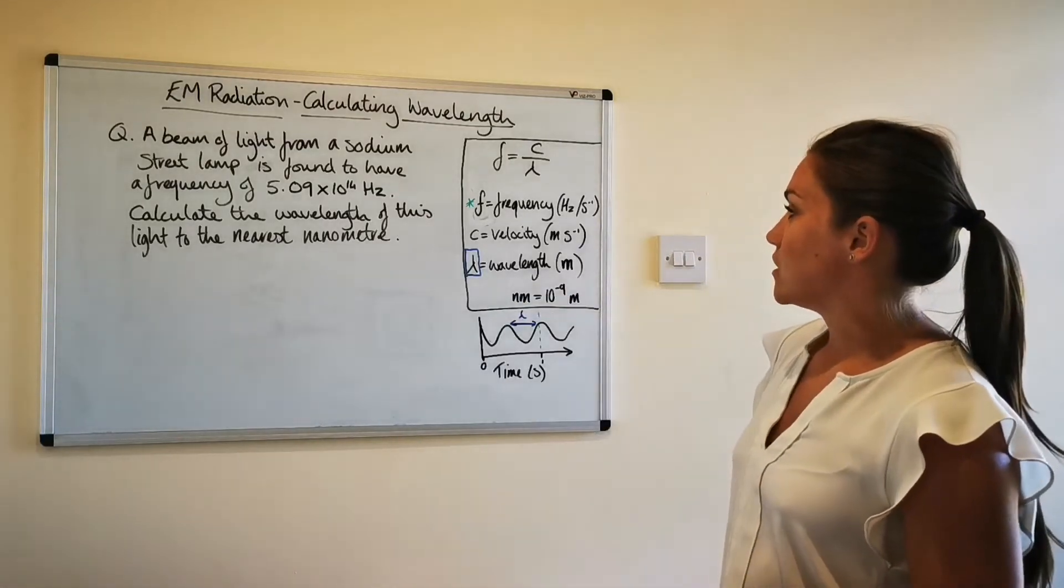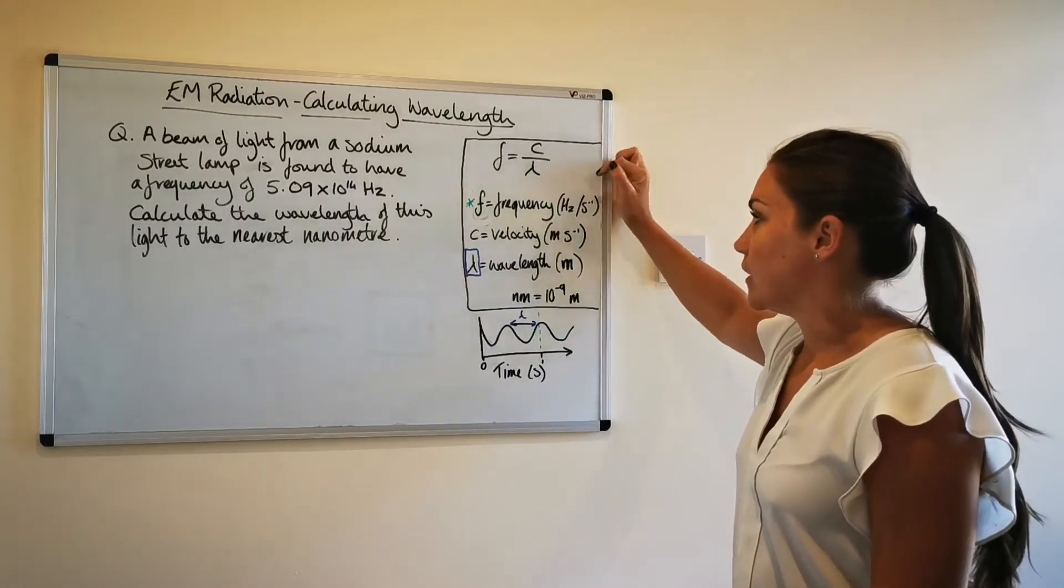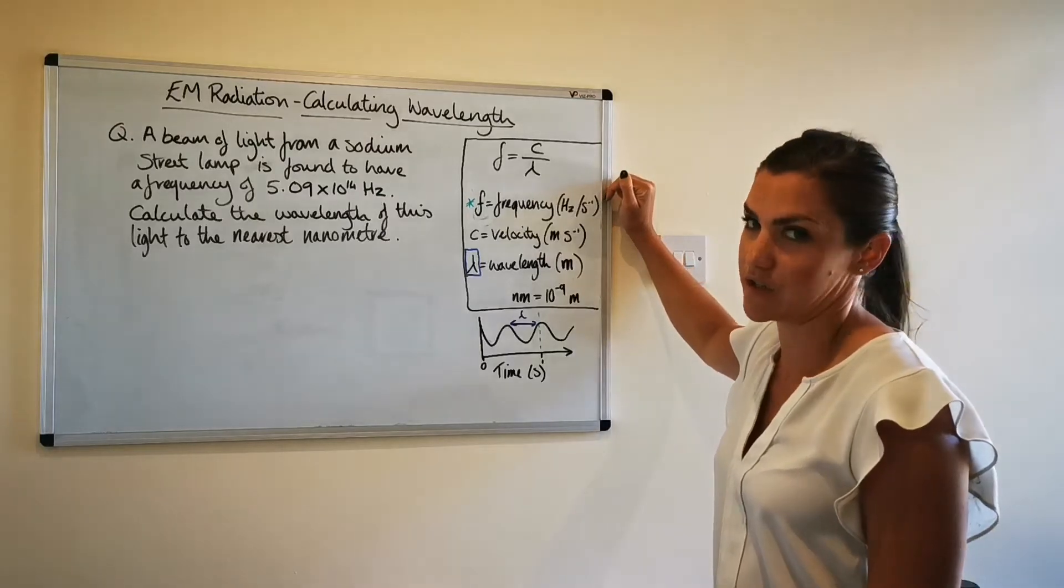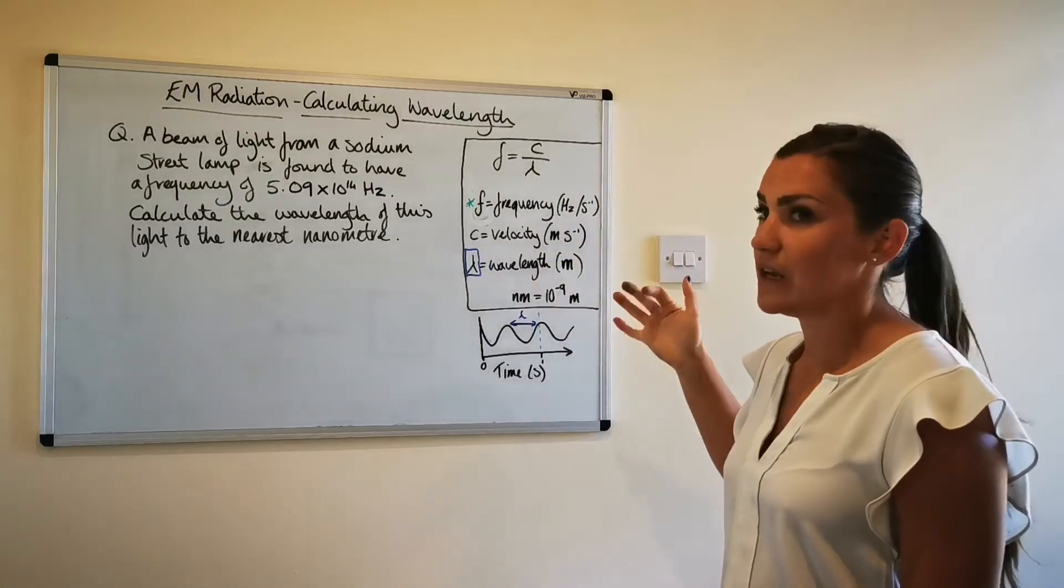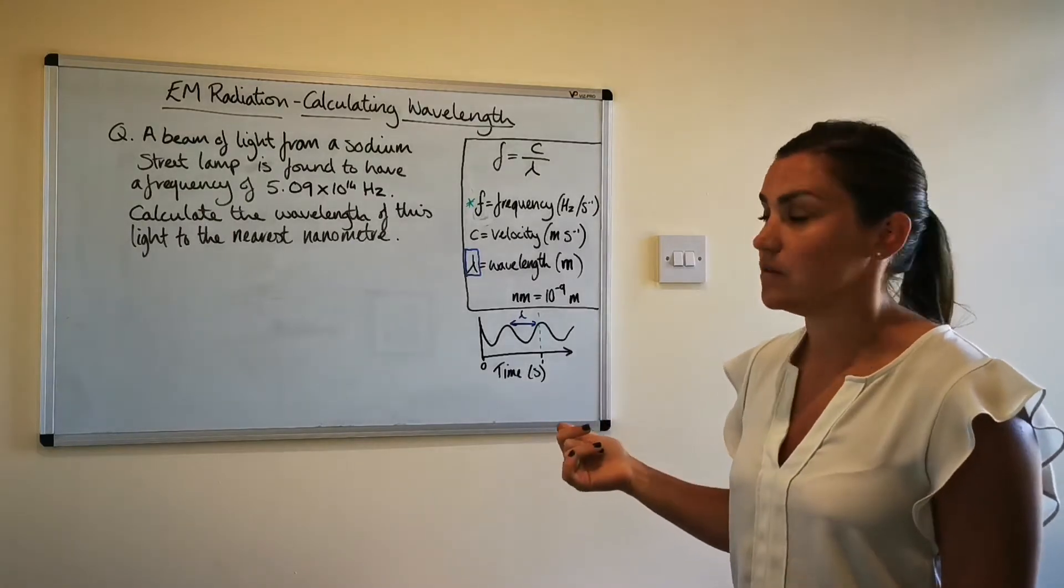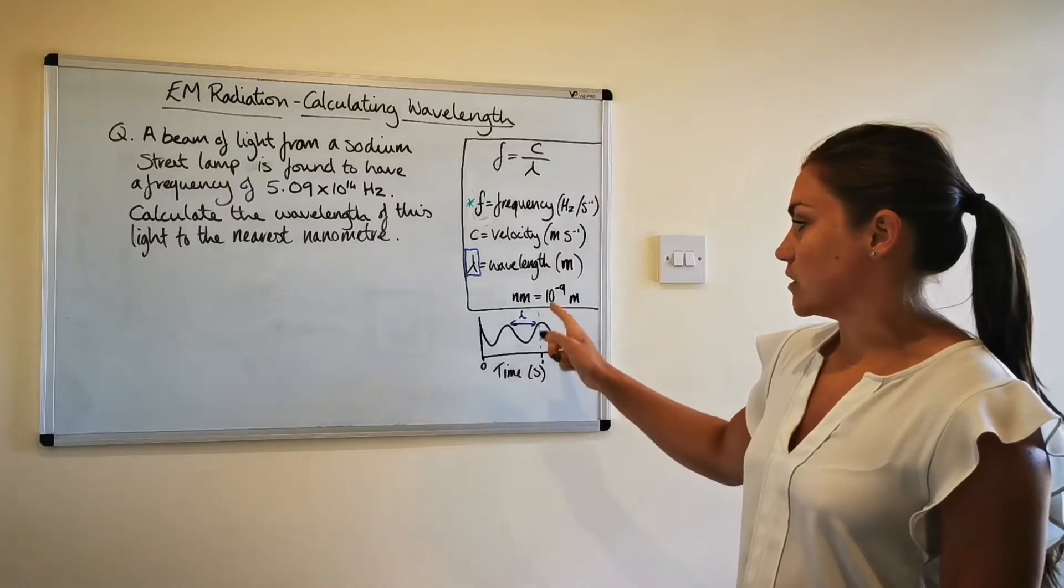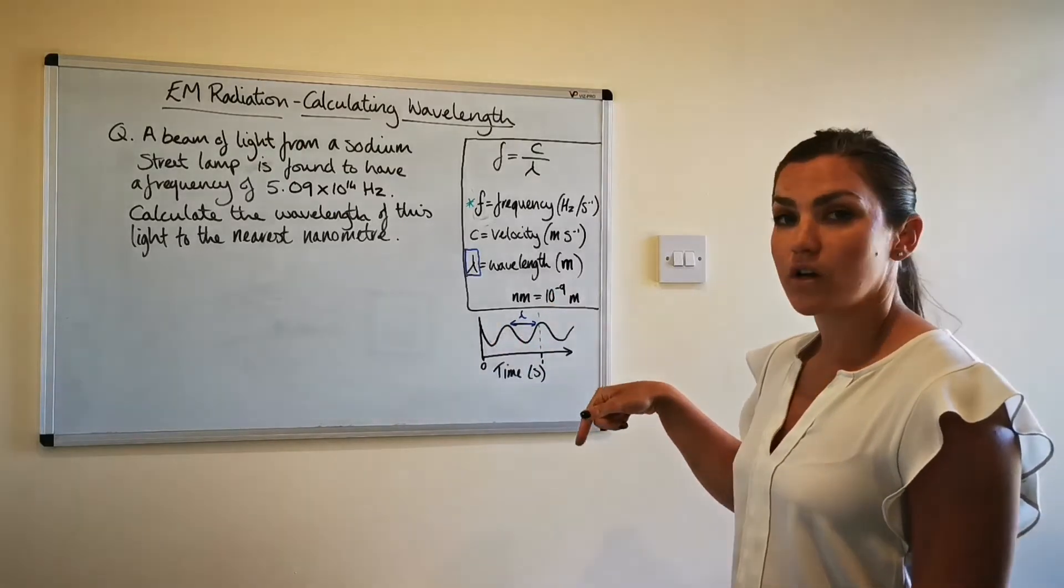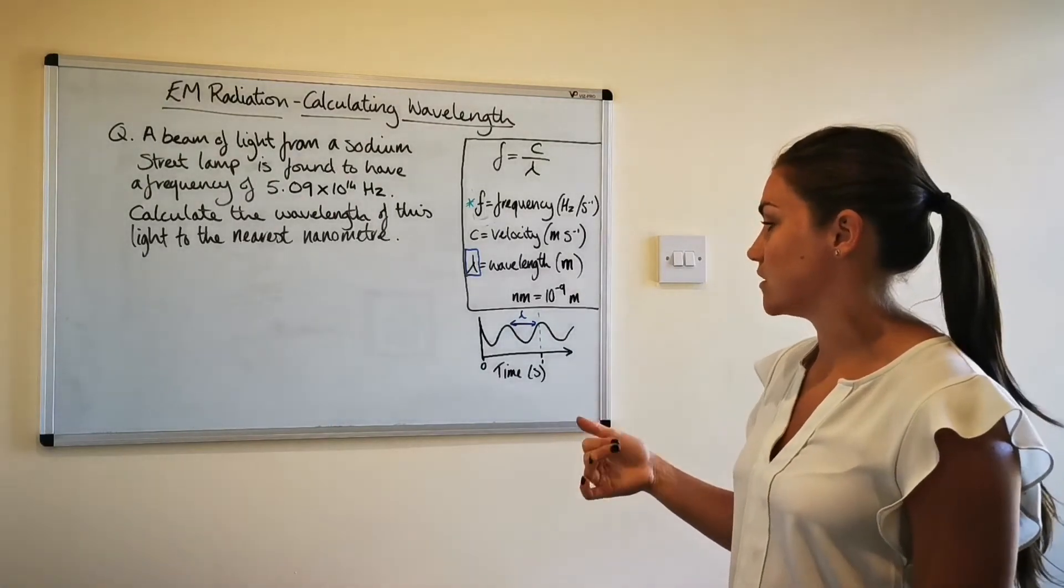So if we quickly talk about this equation first so f stands for frequency and that's given in hertz or that can be taken as per second as well and the frequency basically tells you how many waves occur in a one second time period so if we look at this little graph drawn down here from zero up to the one where I've drawn the green dashed line there's two waves have occurred so the frequency would be two hertz or two per second.